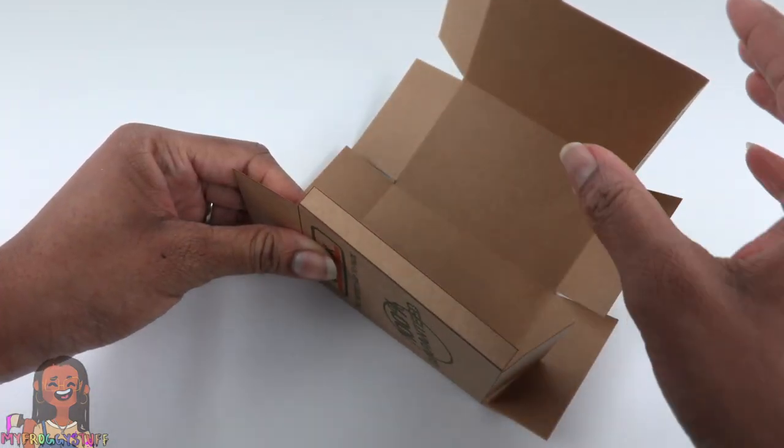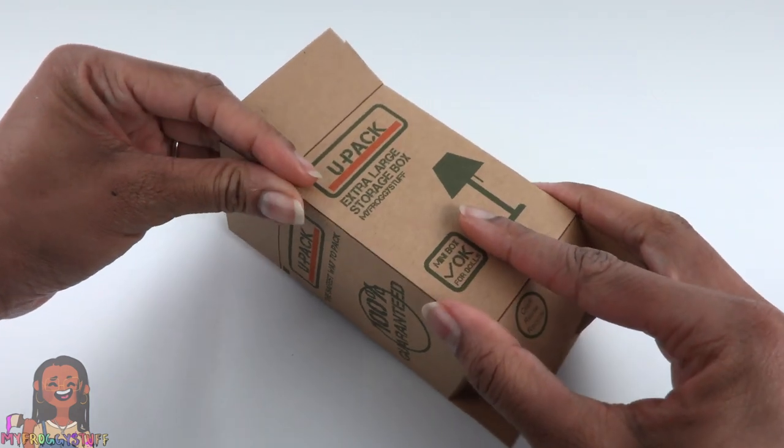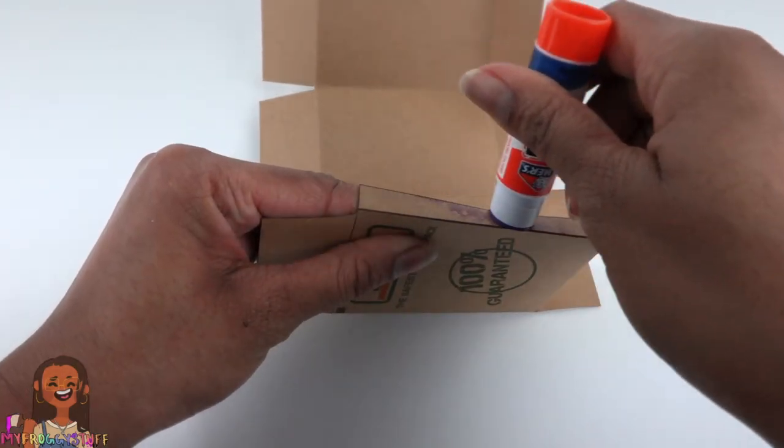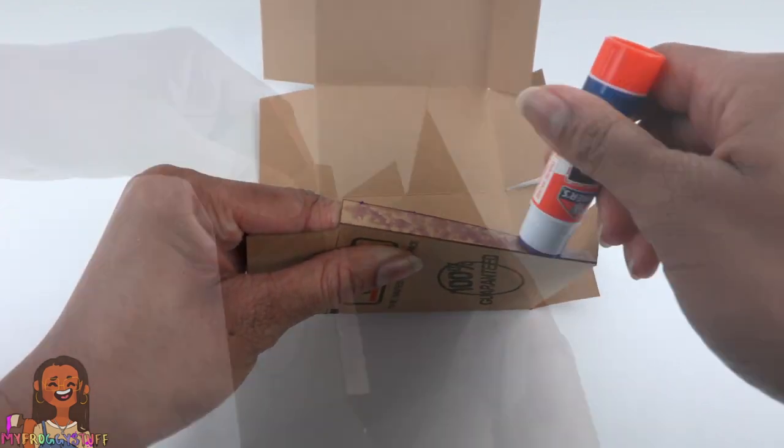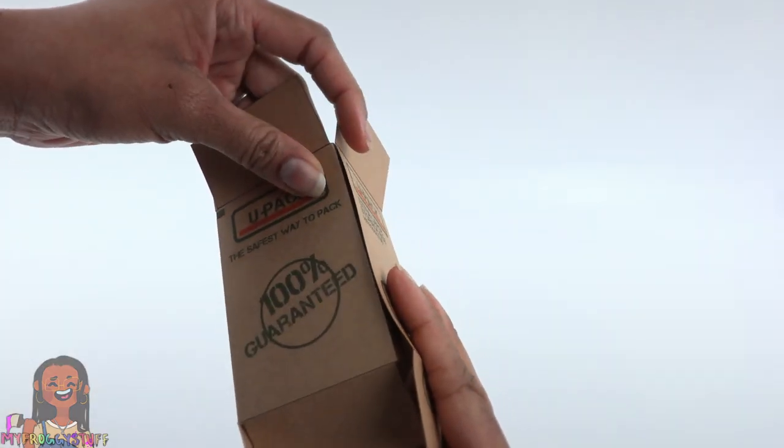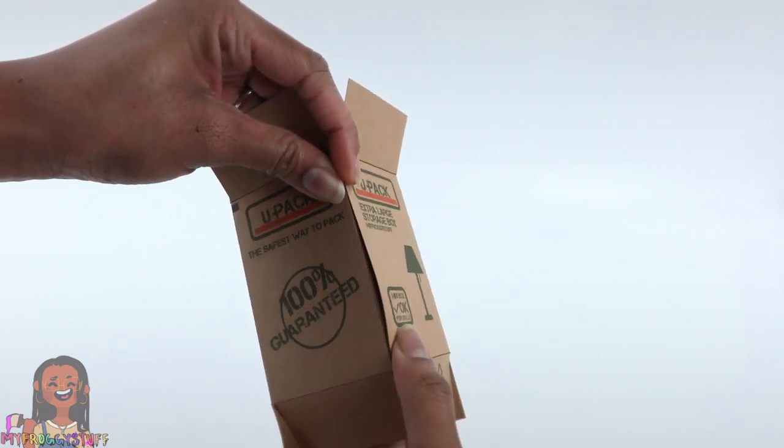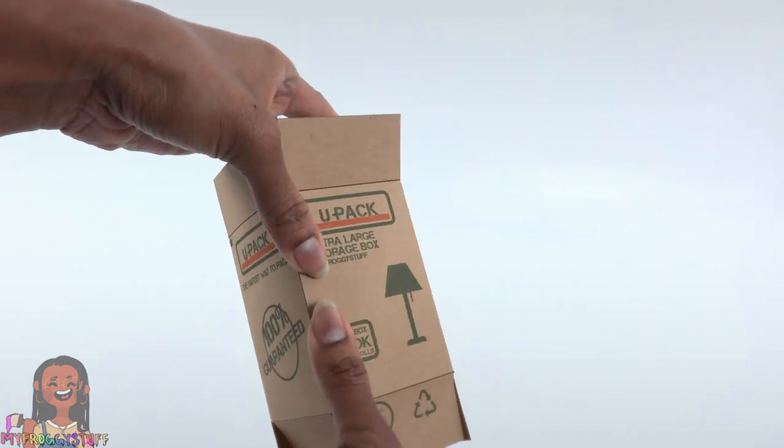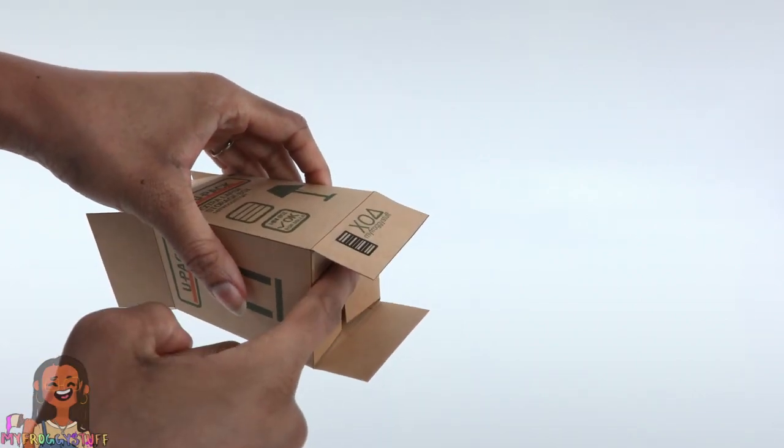We're just going to glue that to close the box. I'm using a glue stick and I'm very generous with the glue because I want to make sure it holds. Now we're going to line up those edges and then press and hold until they dry.